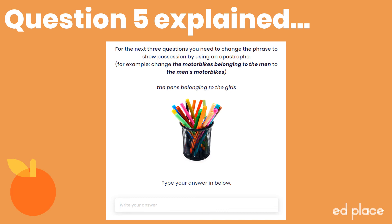This is a different type of question — here you need to write a phrase which shows the possession. In this sentence, the girls own the pens. We know that the word which owns something needs to be the one with the apostrophe. 'Girls' is a regular plural, so we just add an apostrophe after the S in 'girls'.